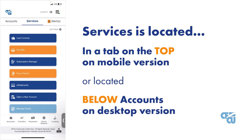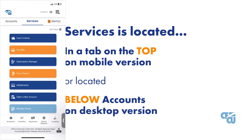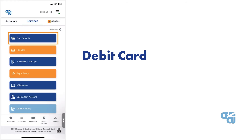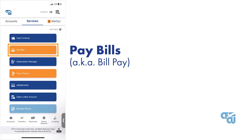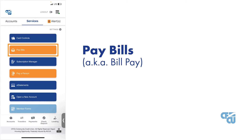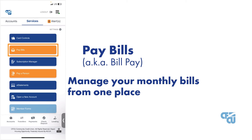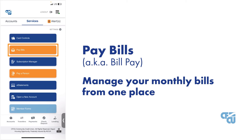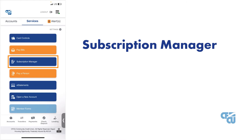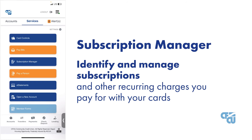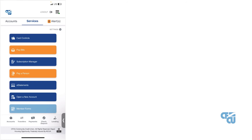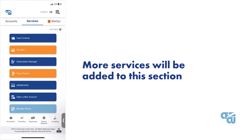Each icon is a service available to you, like debit card controls where you can freeze or activate your card or add travel alerts, pay bills — also known as bill pay — where you can manage your monthly bills from one place online, and subscription manager, where you can identify and manage subscriptions and other recurring charges you pay for with your cards. These are just a few options available today. In the future, you will see even more services added to this section.